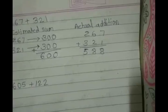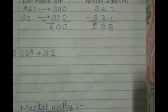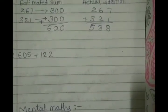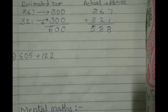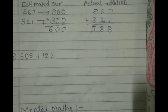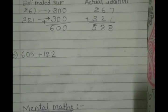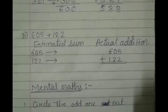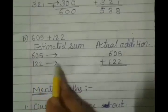Let's move to the another sum that is B, 605 plus 122. Now again, we will do the same thing. Estimated sum and actual addition. So here first, write the estimated sum.